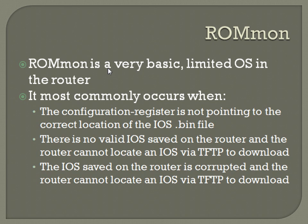ROM-ON is a very basic, limited OS in the router. It most commonly occurs when the configuration register is not pointing to the correct location of the IOS .bin file, there is no valid IOS saved on the router and it cannot locate one via TFTP, or the IOS saved on the router is corrupted and a TFTP fallback also fails. In short, if the router can't load IOS from flash or TFTP, it will fall back to ROM-ON.